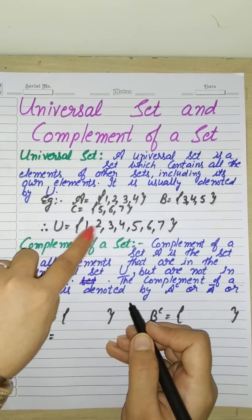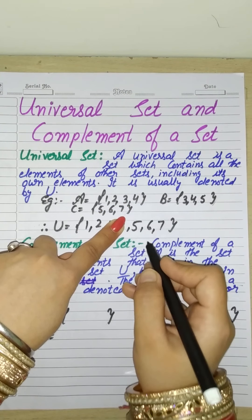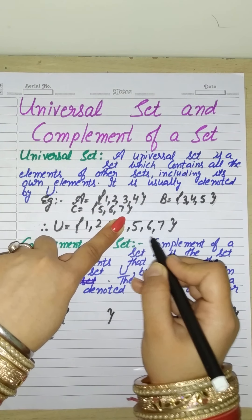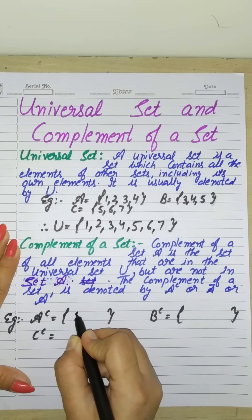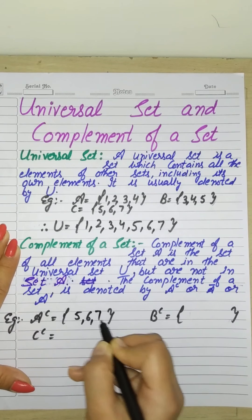So we will exclude these. What else is in the universal set? 5, 6, 7. Then what will come in A's complement? 5, 6, 7.